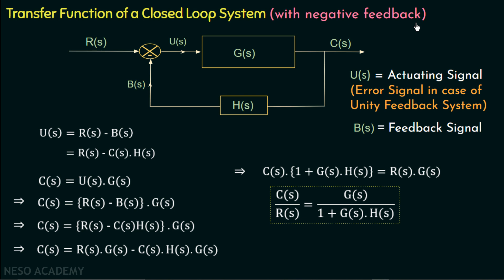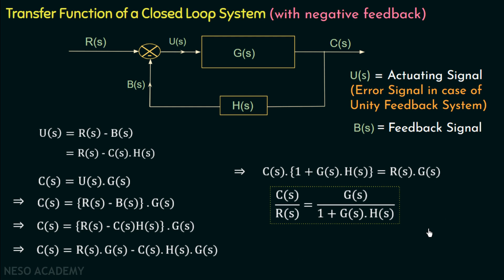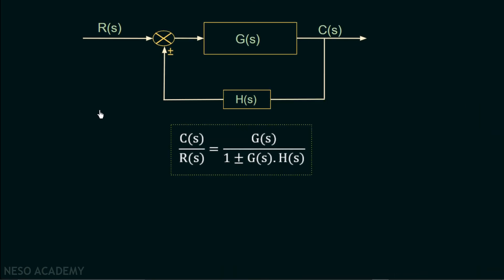If we consider positive feedback, then the transfer function will be CS over RS equal to GS divided by 1 minus GS multiplied with HS. So in place of plus, there will be minus in case of positive feedback. As homework, derive the transfer function of a closed loop system with positive feedback. The transfer function of a closed loop system is GS divided by 1 plus or minus GS multiplied with HS. The positive sign is for negative feedback and the negative sign is for positive feedback.